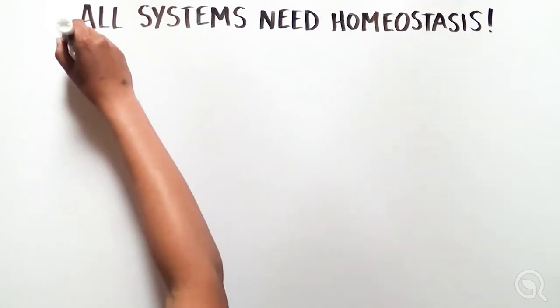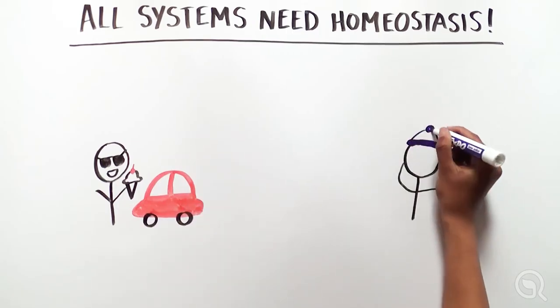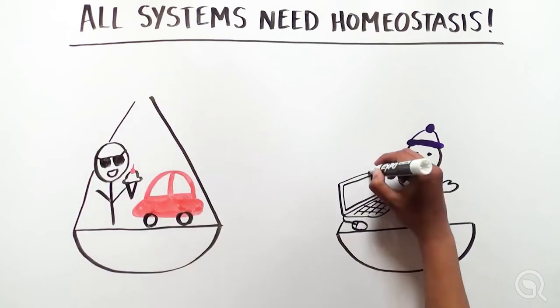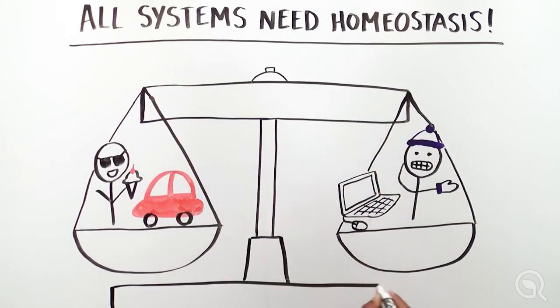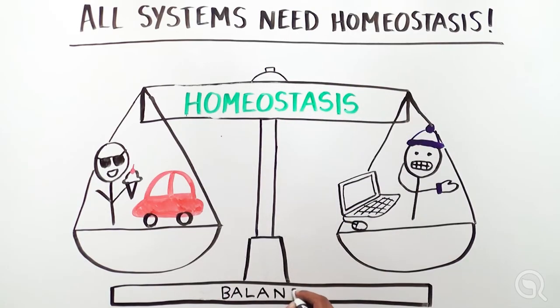As you can see, homeostasis is essential to our overall health. But actually, all systems, like cars and computers, use these similar mechanisms to function normally. So the governing principles of homeostasis ensures that not only we, but also the world around us, is always in balance.